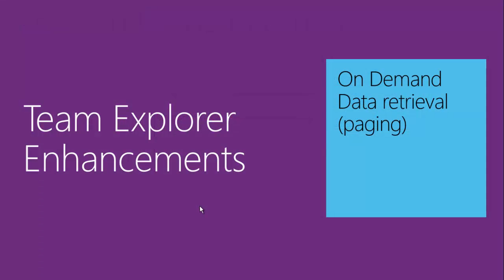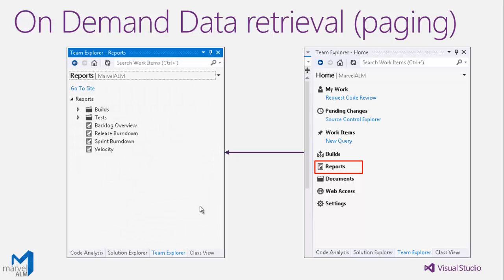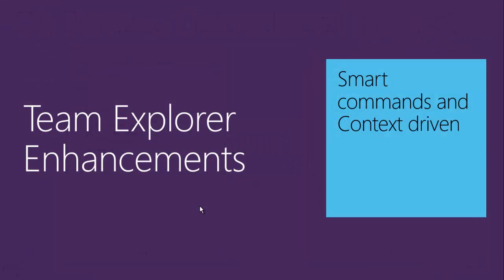On-demand data retrieval and paging: why retrieve all data when you only need some of it? Team Explorer tries to minimize the data retrieved to what you need. The first time you open Team Explorer it will not bring all data like before — in the old version you had to wait for all reports from the reporting server and all documents from SharePoint. Now it doesn't retrieve anything upfront, and when you double-click to open reports it retrieves them on demand.